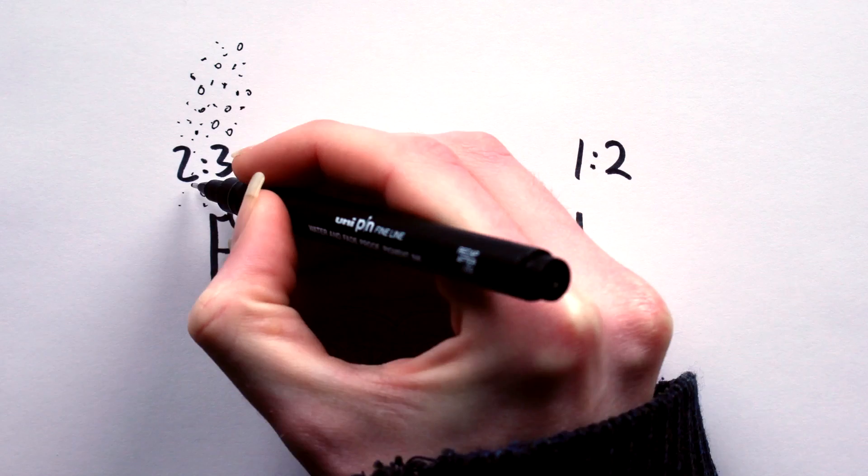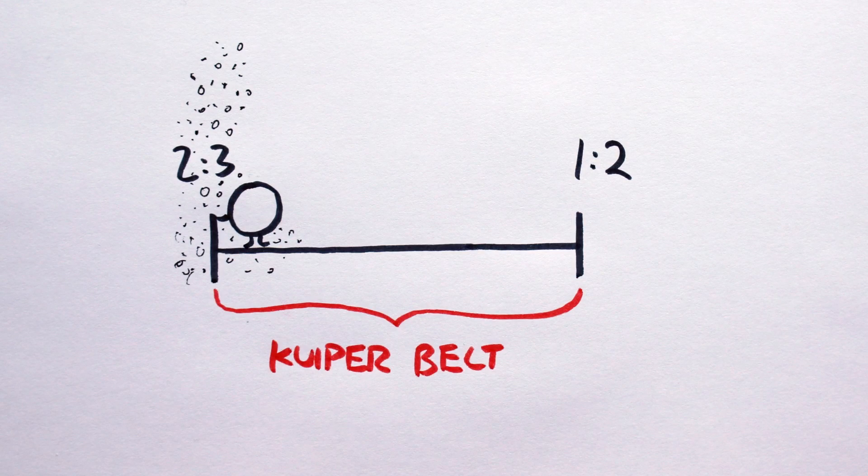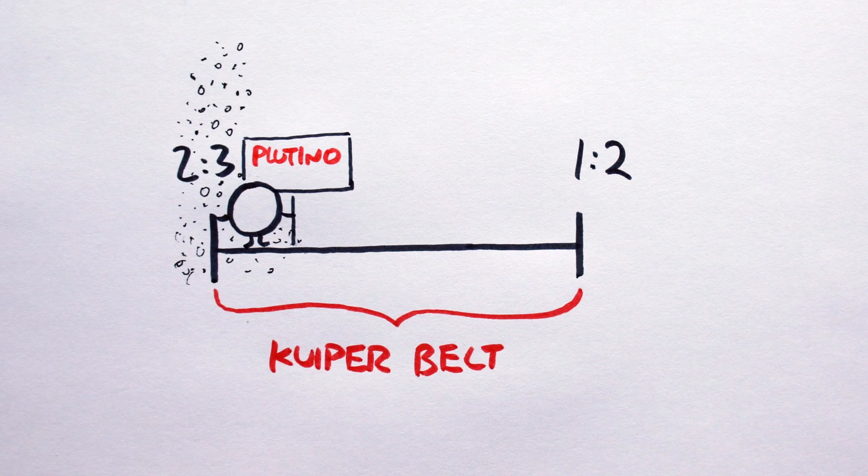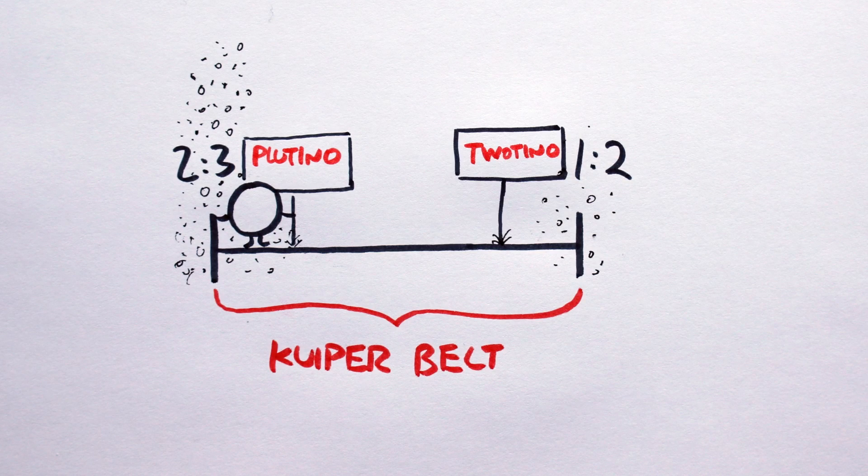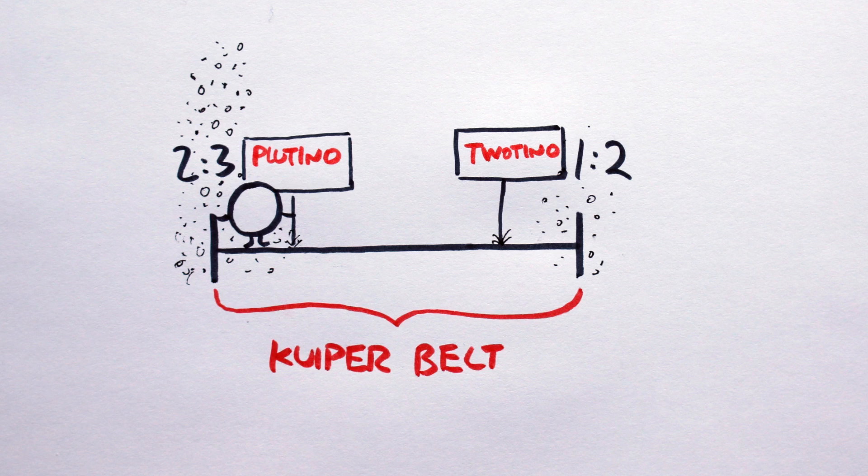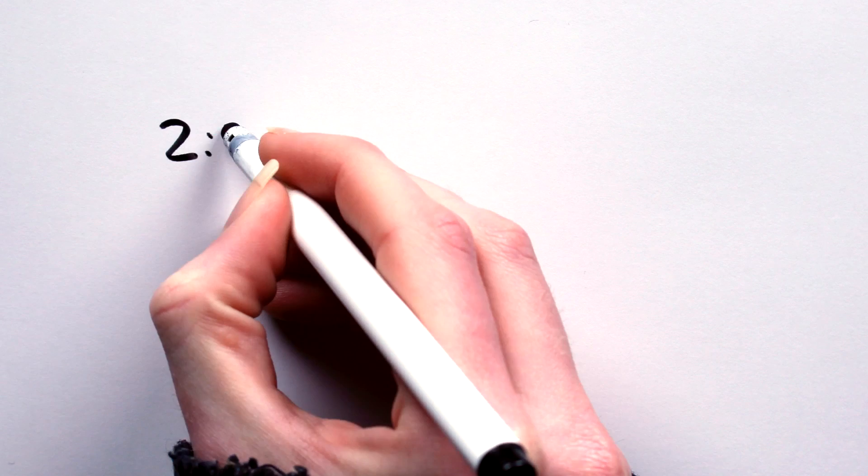Pluto, along with 92 other objects, is at two to three. So we call everything there Plutinos. And we call the bodies at the one to two resonance Twotinos. Perhaps two different stable resonances could define your system's Kuiper Belt.